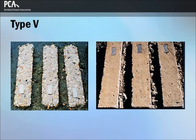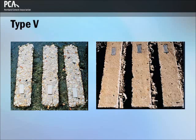Type 5 Portland cement is used in concrete exposed to severe sulfate environments, principally where soils or groundwaters have high sulfate content. Specimens used in the outdoor sulfate test plot in Sacramento, California are 150 by 150 by 760 millimeter (6 by 6 by 30 inch) beams. At left, a rating of 5 for 12-year-old concretes made with Type 5 cement and a water-to-cement ratio of 0.65. At right, a rating of 2 for 16-year-old concretes made with Type 5 cement and a water-to-cement ratio of 0.37.